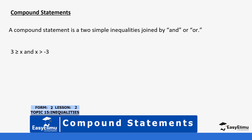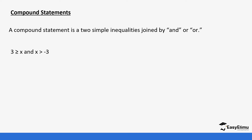For example, if you have x is less than or equal to 3 and x is greater than negative 3, the first thing we do is combine the two statements into one. We put x at the center, then place the two inequality signs. The first sign tells us x is greater than, the second is less than. So we write negative 3 on the left side.